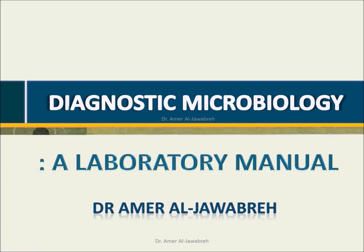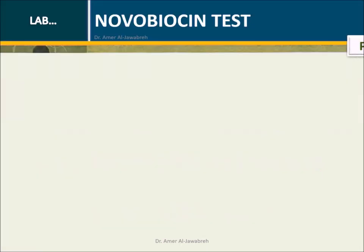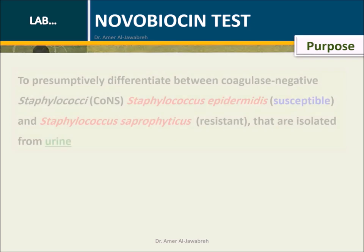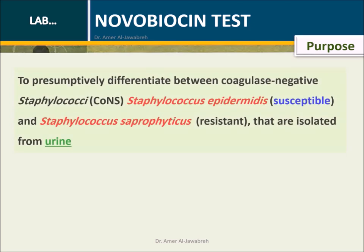Diagnostic Microbiology: A Laboratory Manual. Purpose: To presumptively differentiate between coagulase-negative staphylococci, Staphylococcus epidermidis, and Staphylococcus saprophyticus, that are isolated from urine.